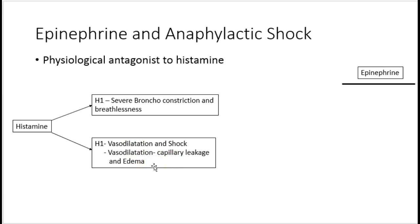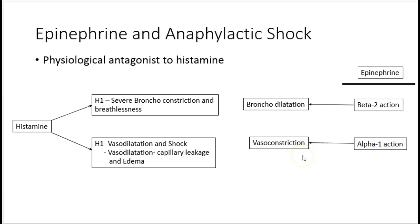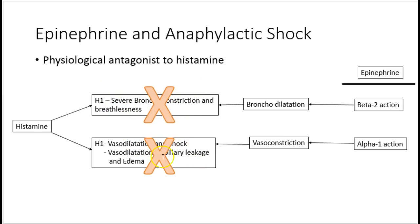Epinephrine is called a physiological antagonist because its beta 2 action causes bronchodilatation and its alpha 1 action causes vasoconstriction, thereby increasing blood pressure. These two actions inhibit the bronchoconstriction and vasodilatory effects of histamine, making epinephrine a perfect antagonist in anaphylactic shock.